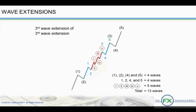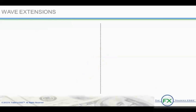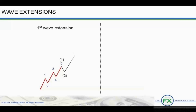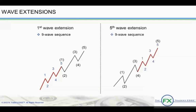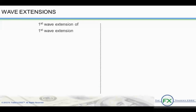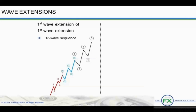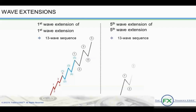Now, the next question is: if wave 3 is extended, what does that tell you about the length of wave 5? It won't be extended — that is the correct answer. Waves 1 and 5 extensions also occur in the form of nine-wave and 13-wave sequences. If wave 1 is extended, it is likely that waves 3 and 5 will not be extended. And if wave 5 is extended, it is likely that waves 1 and 3 were not extended. In one example, waves 1 and 5 extensions occur as 13-wave sequences: the first is a first wave extension of a first wave extension, and the second is a fifth wave extension of a fifth wave extension.